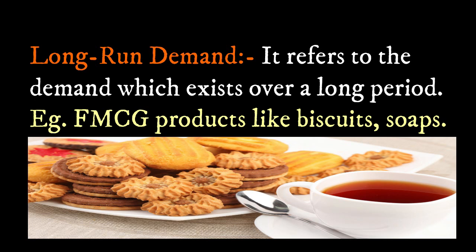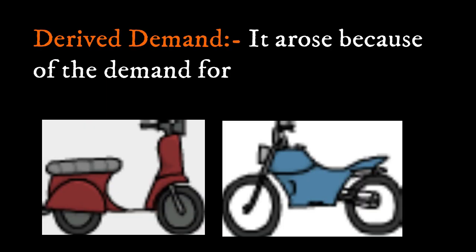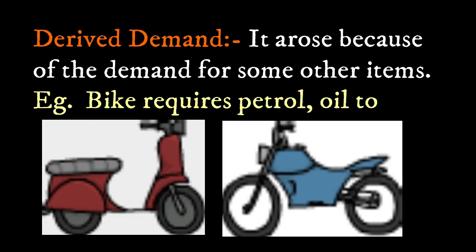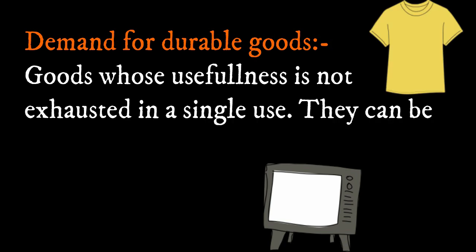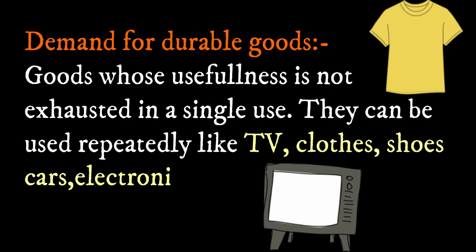Examples of long-run demand include FMCG products like biscuits and soaps. Derived Demand arises because of the demand for some other items — for example, a bike requires petrol and oil to run.